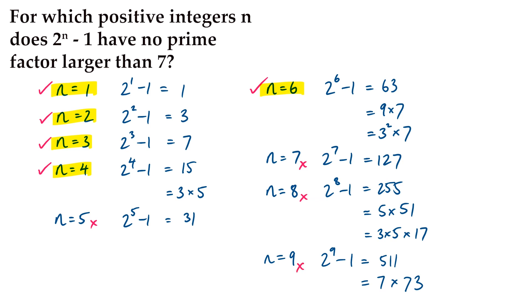Having tried all the single-digit values of n, we have n equals 1, 2, 3, 4, and 6, for which 2 to the n minus 1 has no prime factors larger than 7. But are these the only solutions? If no, of course we want to find the other solutions. If yes, we need to prove that these are the only solutions. So what could we do?